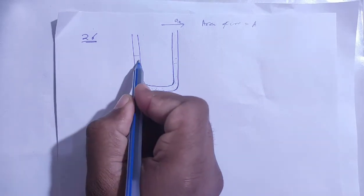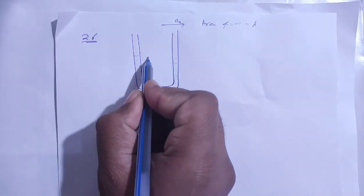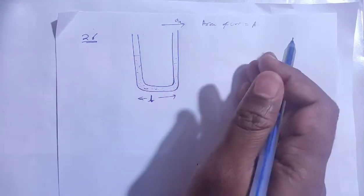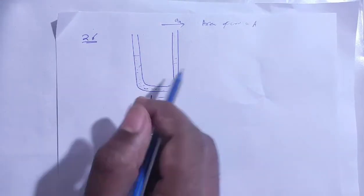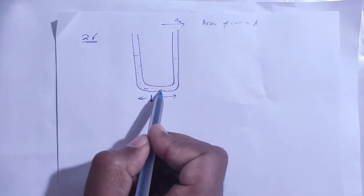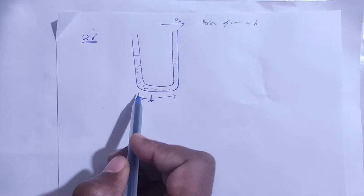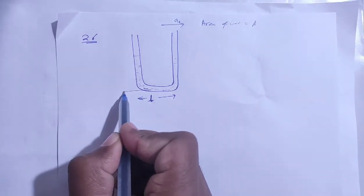If you don't accelerate, the liquid remains at the same height. But when you accelerate, there's a difference in the height in the two arms.